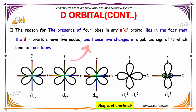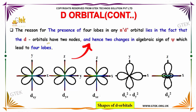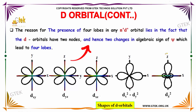The reason for the presence of four lobes in any d-orbital lies in the fact that d-orbitals have two nodes, and hence two changes in the algebraic sign of psi, which leads to four lobes.